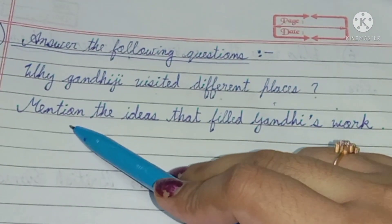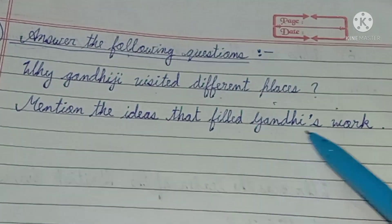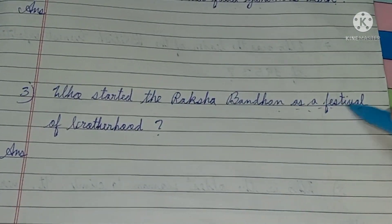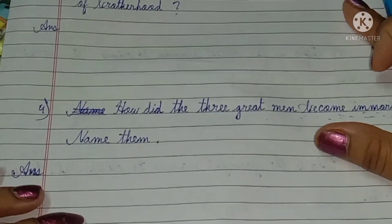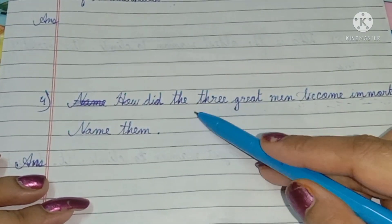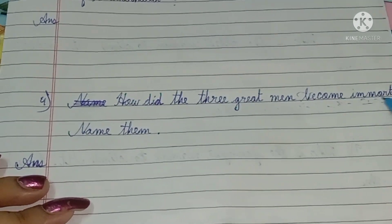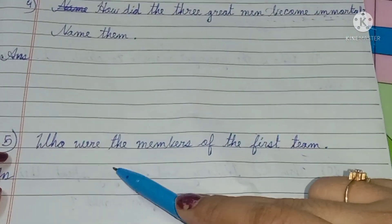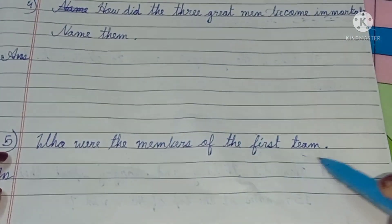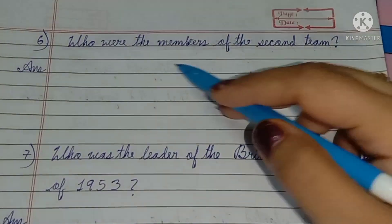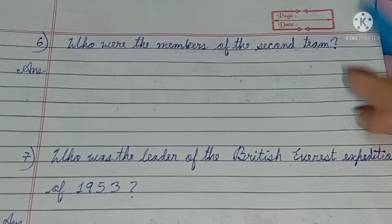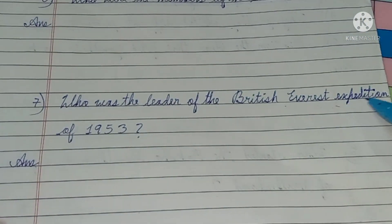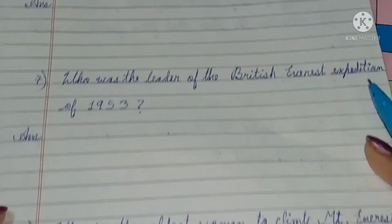Next question: mention the idea that filled Gandhi's work. Who started Rakshabandhan as a festival of brotherhood? How did great men become immortal? Name them. Who were the members of the first team? Who were the members of the second team? Who was the leader of the British Everest expedition of 1953?